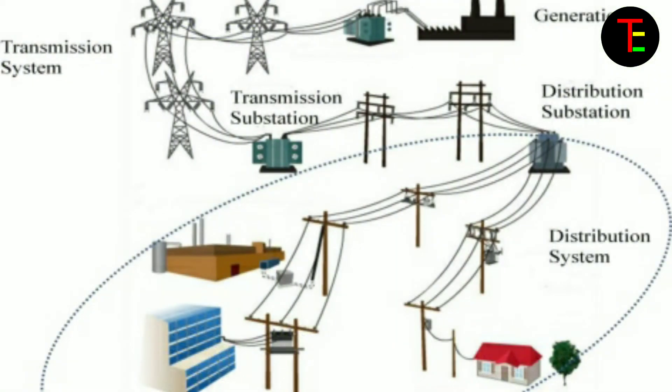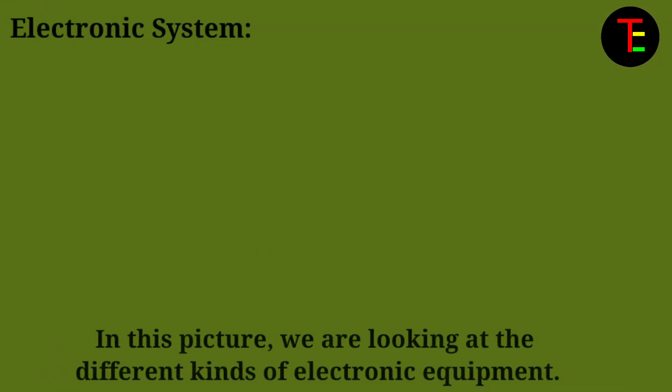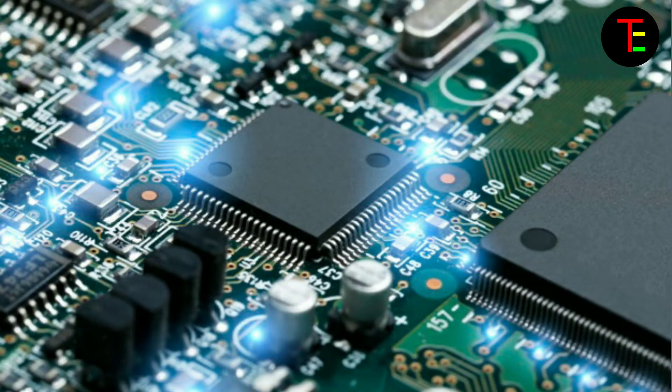No.13 Electrical system: In an electrical system network, electrical power is transmitted from generation to distribution system with their different types of equipment. You can see the following network of an electrical system. In this picture, we are looking at the different kinds of electronics equipment.